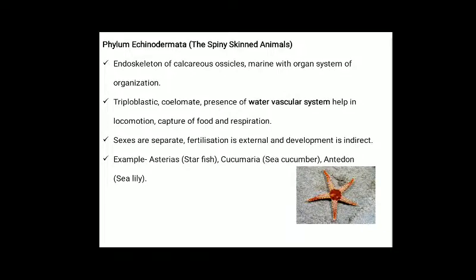Phylum Echinodermata: endoskeleton of calcareous ossicles. They are marine with organ system level of organization. Triploblastic, coelomate. Presence of water vascular system helps in locomotion, capture of food and respiration. Sexes are separate. Fertilization is external and development is indirect. Examples include starfish, sea cucumber and sea lily.